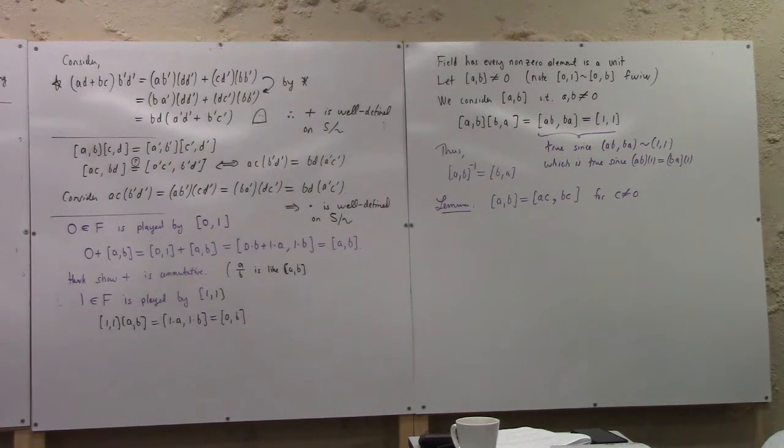So if you look at this, you could call this like d tilde or something, a over 1, right? A is an element of d.